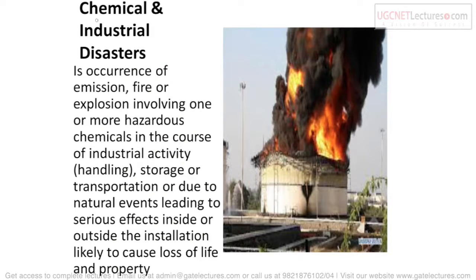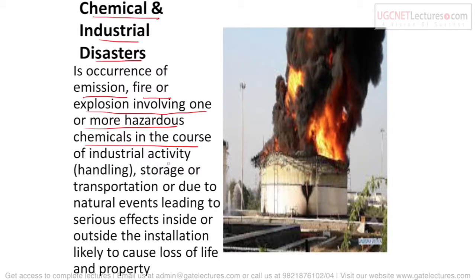The next is chemical and industrial disaster. It is the occurrence of emission, fire, or explosion involving one or more hazardous chemicals in the course of industrial activity — such as handling, storage, transportation — or due to natural events, leading to serious effects inside or outside the installation causing loss of life and property.